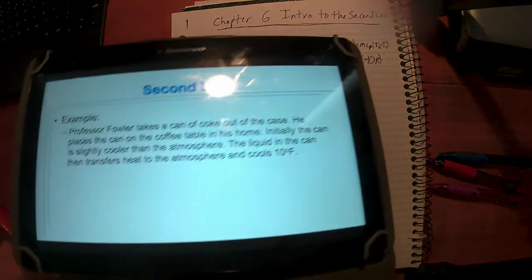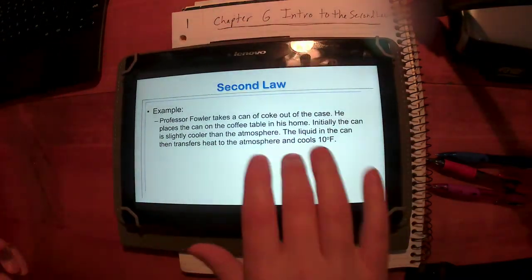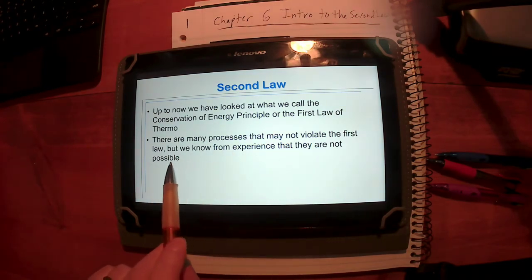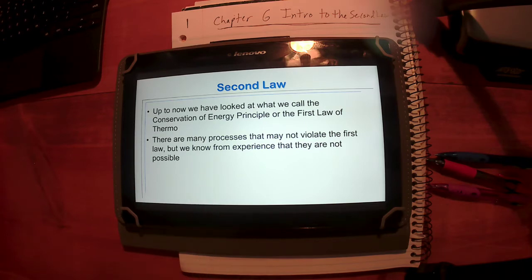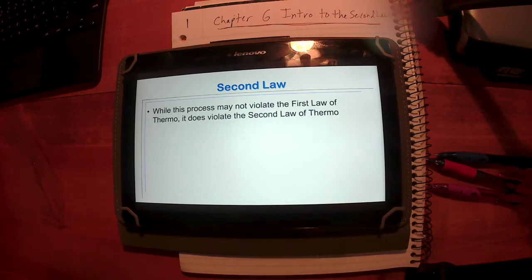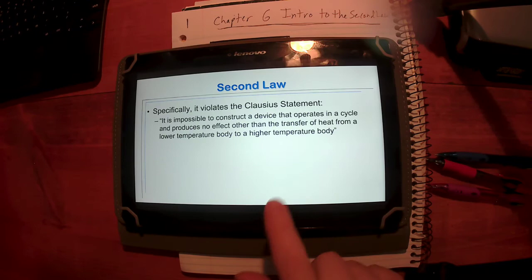Now as we know, we just said there are processes we could propose that may behave under the first law, but then we know they're not possible. How we know they're not possible is they do not behave according to the second law. It's pretty easy to obey the first law, it's a little harder to stay within the second law when we start proposing these really cool processes.